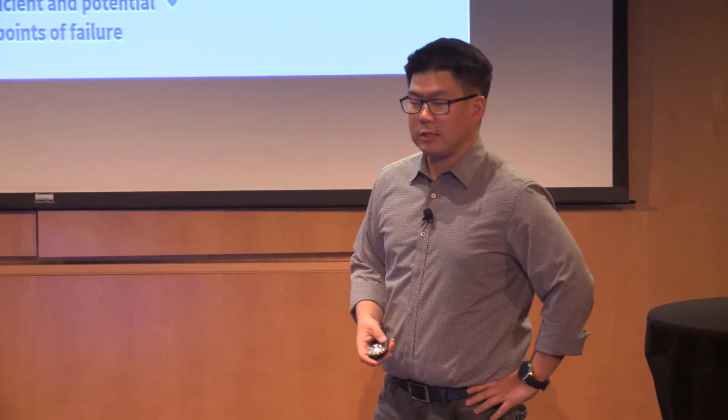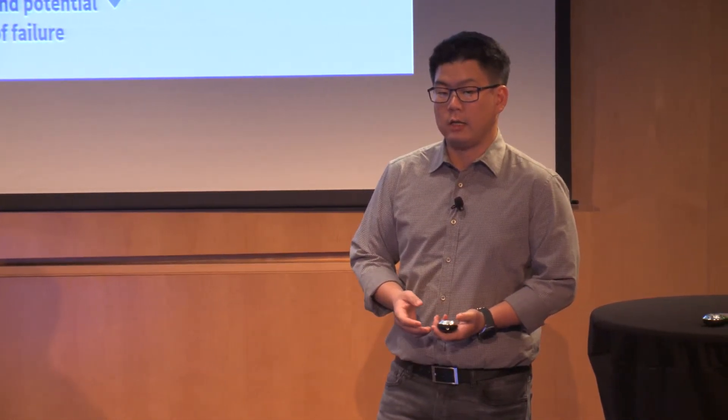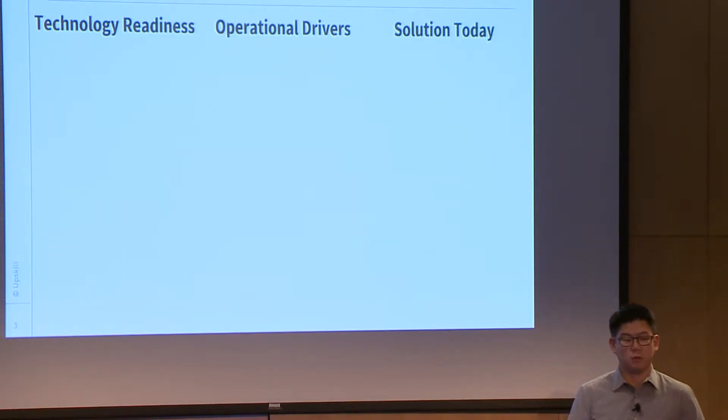Typically, that information is printed out and delivered as a set of manuals or work instructions, or it's located at a workstation far away. The information has to get stored in the brain — which is analog — then you go and do the work, and at the end of the process you take the results and go back to your terminal or paper and manually enter that data back into the digital system. In those two digital-to-analog and back-to-digital transition points, you're creating potential inefficiencies and margin for error, and that's what we're fundamentally trying to address with smart glasses — to eliminate that transition point.